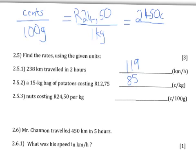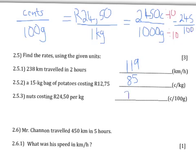A kilogram is 1000 grams — 'kilo' means a thousand. We don't want 1000 grams, we want 100 grams, so we convert by dividing by 10. Dividing both the top and bottom by 10 gives us 245 cents per 100 grams. So the answer is 245 cents per 100 grams.